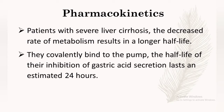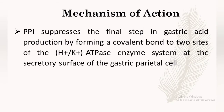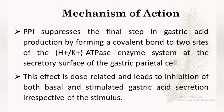The mechanism of action of pantoprazole is that it inhibits the final stage in gastric acid production by forming a covalent bond — the strongest bond — to two sites of the hydrogen-potassium ATPase enzyme system at the secretory surface of the gastric parietal cell. This effect is dose-related: if the dose is increased, the effect will also increase, leading to inhibition of both basal and stimulated gastric acid secretion irrespective of the stimulus.